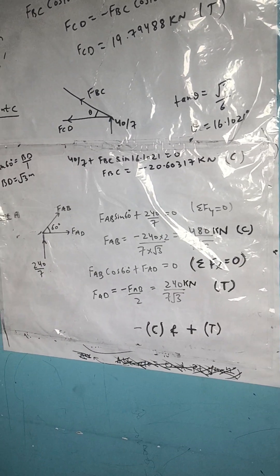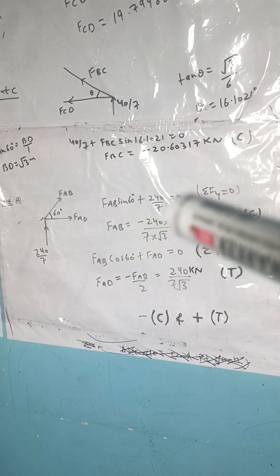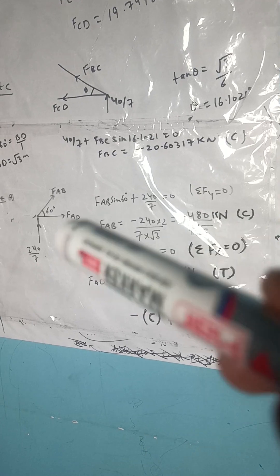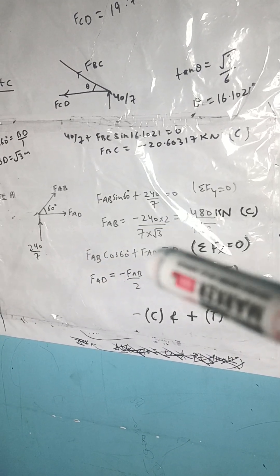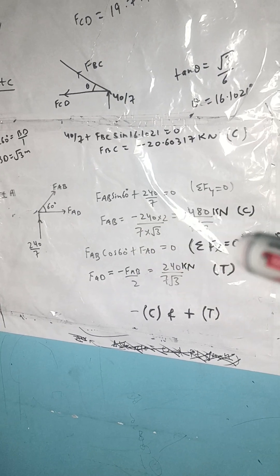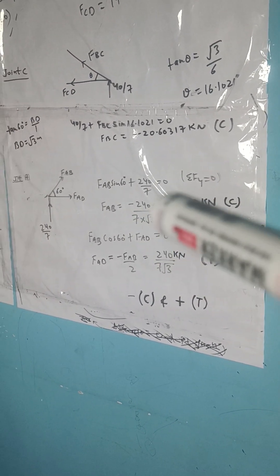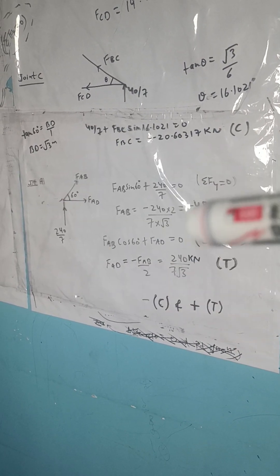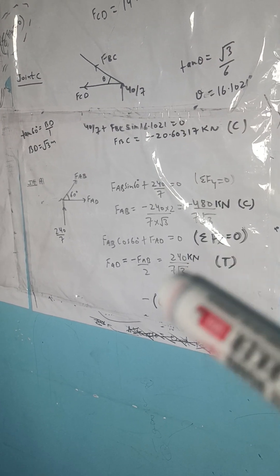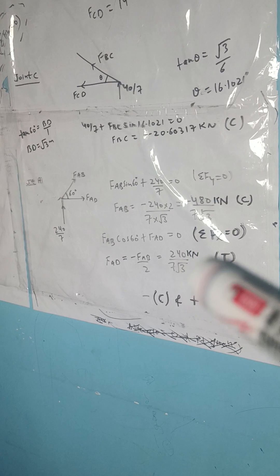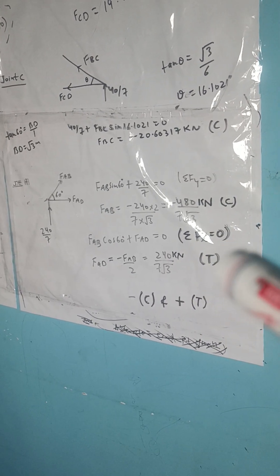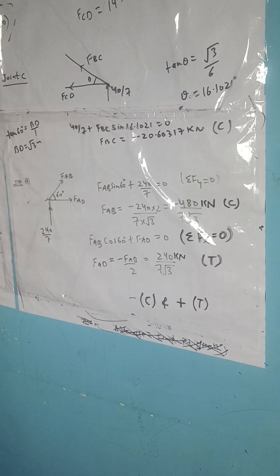At joint A, FAB and FAD are acting. From summation Fy = 0: FAB·sin60° + 240/7 = 0, giving FAB = −480/(7√3) kilonewtons — negative, meaning it is compressive. From summation Fx = 0: FAB·cos60° + FAD = 0, giving FAD = 240/(7√3) kilonewtons — positive, meaning tensile (away from joint).